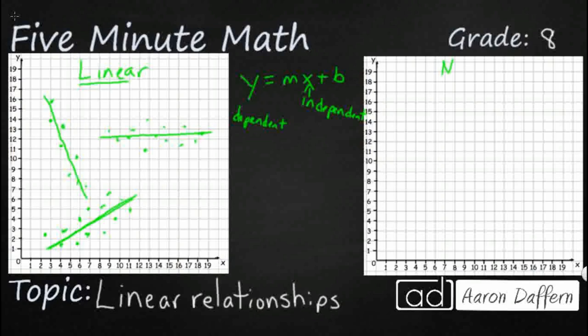Now we can show some examples of non-linear relationships and you can tell just by that prefix non that we're looking for data sets that do not have linear relationships.